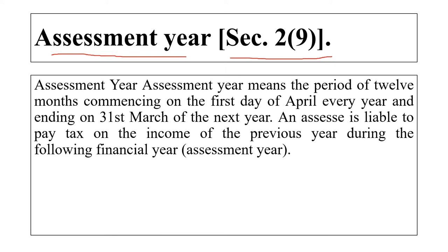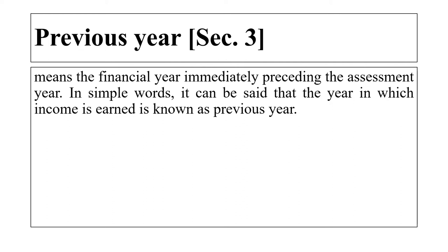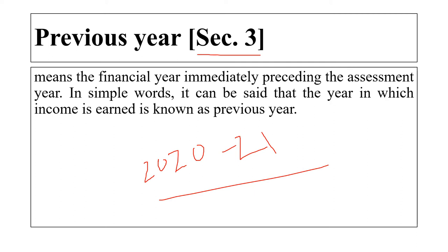The assessee is liable to pay tax on the income of the previous year during the following assessment year. So I pay tax during the assessment year, but for the income earned in the previous year, not the present year. The previous year, given under Section 3, means the financial year immediately preceding the assessment year. For example, if 2021-22 is the assessment year, then 2020-21 is the previous year, and income earned during 2020-21 is liable to tax in 2021-22.